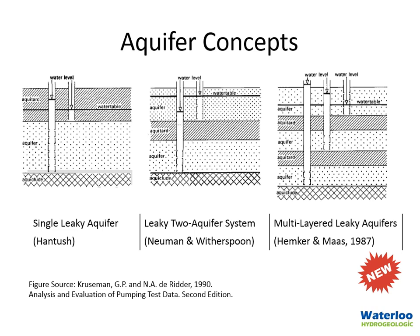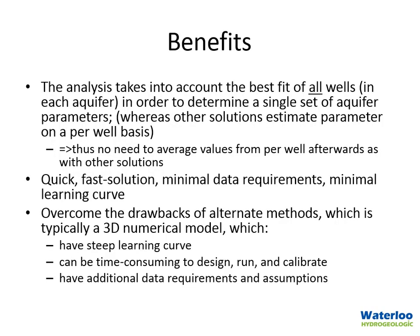With this method you can have a wide variety of aquifers which are separated by aquitards. The biggest benefit of the solution is that the analysis takes into account the best fit from all wells in each aquifer in order to determine a single set of aquifer parameters, whereas other solutions such as Theis or Neuman will provide estimates for the parameter values on a per-observation-well basis.